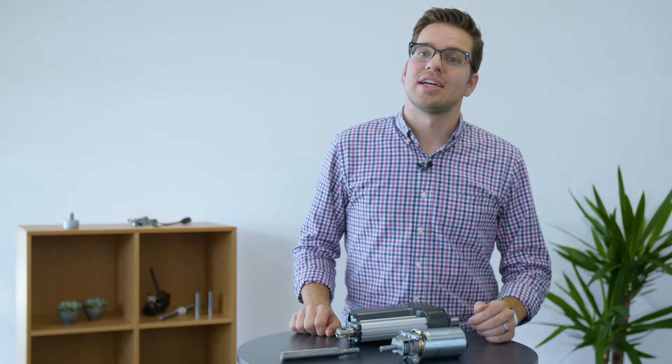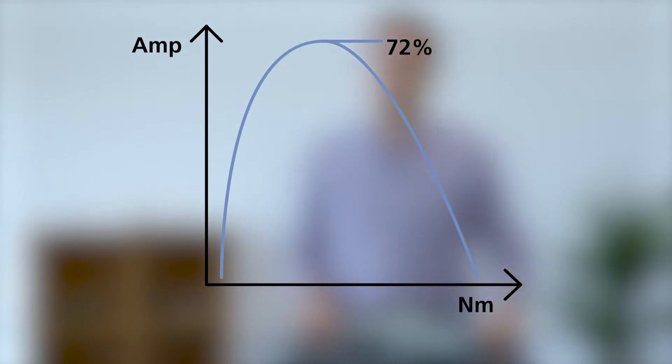Linak actuators are designed to get the most out of the motor's efficiency. Typically, a motor's efficiency is about 72%. An actuator is designed to work within 25% of the area where the motor has its maximum performance. The motor's torque is always kept the same to ensure a high reliability.